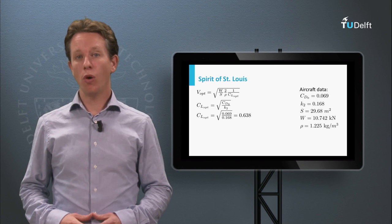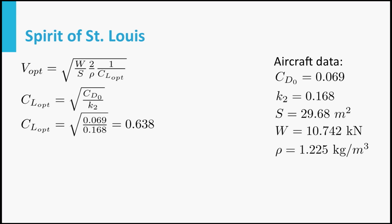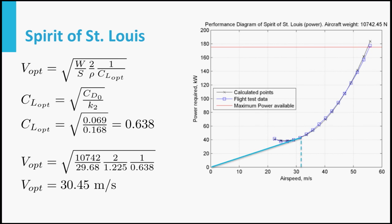Now, this number you can calculate before you start flying, write it down in a pilot manual, and tell it to the pilot so that he or she can look up this value, and always fly at the most optimal condition for maximum range. Now, let us determine the optimal speed in terms of maximum range for our example aircraft, the Spirit of St. Louis. If we fill in the equation for CL we have just derived with the data of the aircraft, we obtain that the optimum CL is equal to 0.638. Now, using this value we can actually calculate the optimum airspeed, which equals about 30 meters per second. Now, see that this exactly matches the result we already determined graphically from the performance diagram. So we can calculate it both graphically or analytically.